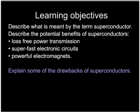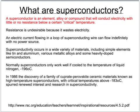Now we move on to some special kinds of metals called superconductors, looking at the benefits and drawbacks. These are facts you have to learn. The benefits are loss-free power transmission, making them very suitable for carrying electricity over distances; superfast electronic circuits, potentially replacing current ones in the future; and powerful electromagnets, already used in MRI machines. A superconductor is an element, alloy, or compound that conducts electricity with little or no resistance below a certain critical temperature — around minus 150 to minus 200 degrees Celsius. This is one of the main issues: they only work at very, very low temperatures.